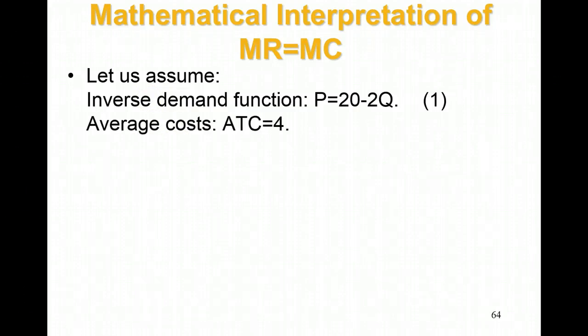We have a constant average total cost of 4. Let me review: total revenue is P times Q, and total cost is average total cost times Q.